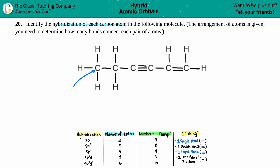So for this first carbon, what's going on around it? It's got one single bond - that's one thing, two things, three things, four things. I can't count the other bonds because those aren't bound to this carbon. Four things, four letters - this carbon is sp3 hybridized.